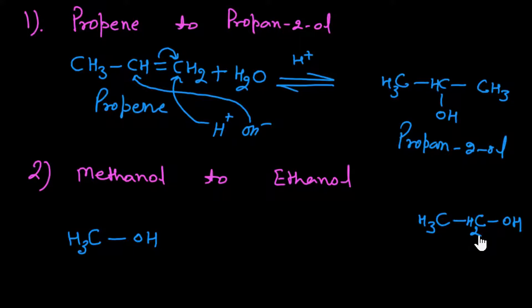To increase the carbon chain, we can take the help of a CN group, or we can use a Grignard reagent, which also enlarges the carbon chain. We can also use the Reformatsky reaction (boards reaction), which doubles the carbons. Here, we will use the Grignard reagent approach. But Grignard reagent reacts with carbonyl compounds, so we need to first make a carbonyl compound from methanol.